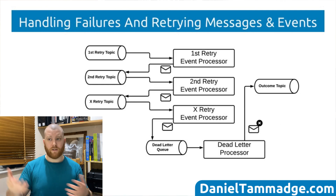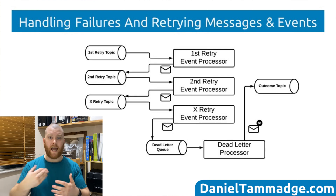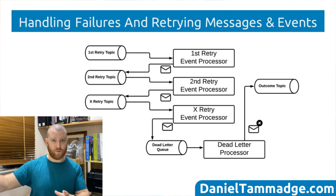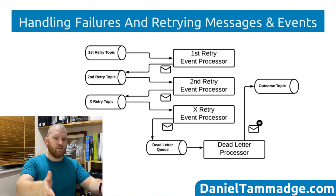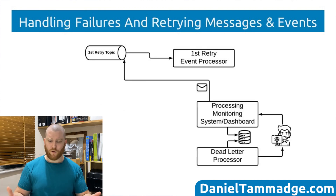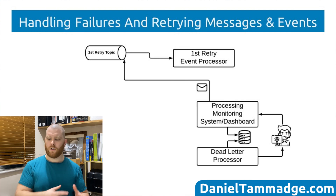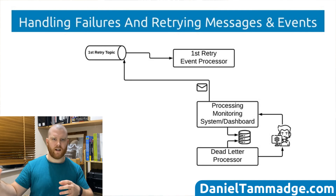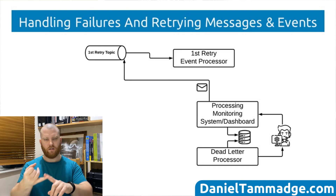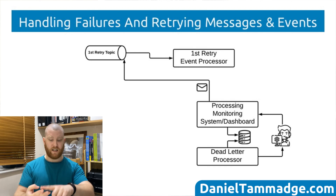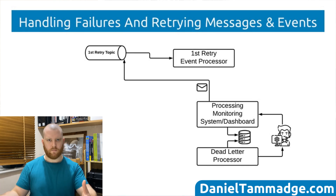Alternatively, it might just publish to the outcome topic on failure because it can't process and needs to send an absolute result to the outcome topic and let a downstream service handle that. The dead letter processor consuming the dead letter queue could also store it to the database, raise a notification, log an event into a log or monitoring system, raise another event, or send an email which would trigger a support team to go and investigate.